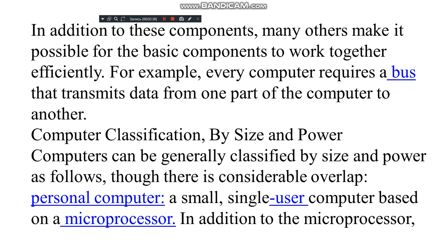For example, every computer requires a bus that transmits data from one part of the computer to another. Computers can be generally classified by size and power as follows, though there is considerable overlap. Personal computer: a small, single-user computer based on a microprocessor.